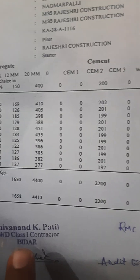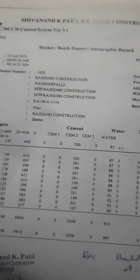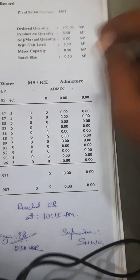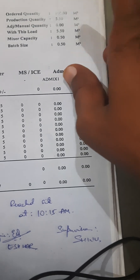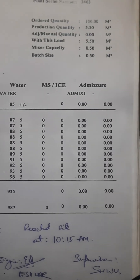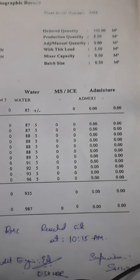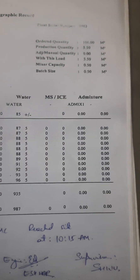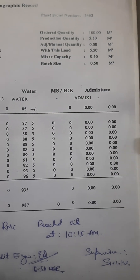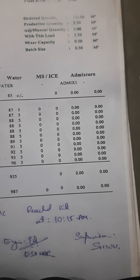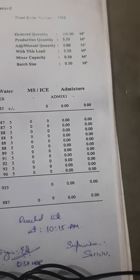This section shows the RMC supplier name and the ordered quantity. The production quantity sent is 5.5 m³. The batch size is 0.5 m³, meaning they batch 0.5 m³ of concrete at a time. To achieve 5.5 m³ total, they need to batch 11 times.